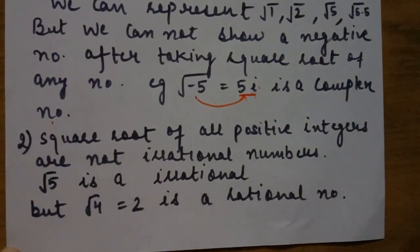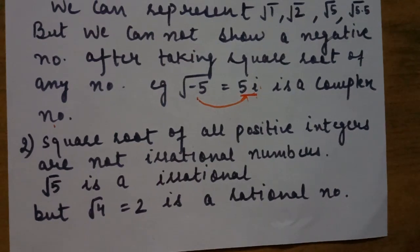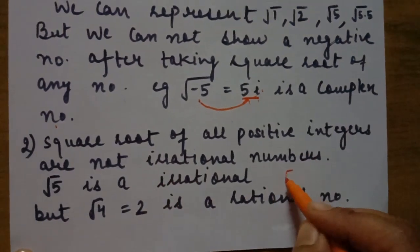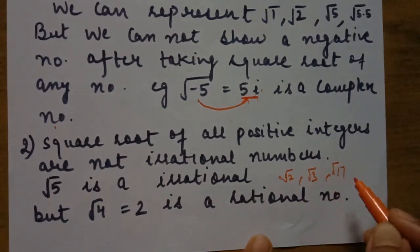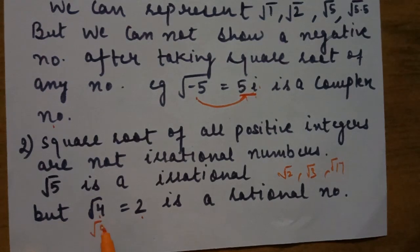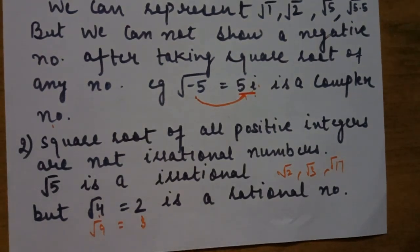Second question: are the square roots of all positive integers irrational? If not, give an example. Answer: square roots of all positive integers are not irrational — they may be rational or irrational. For example, √5, √2, √3, √17 are all irrational. But √4 = 2 and √9 = 3 are rational numbers. So square roots of positive integers may be rational or irrational.